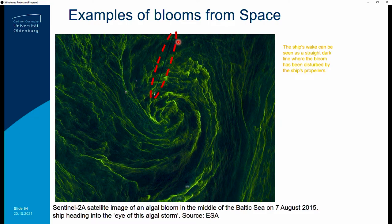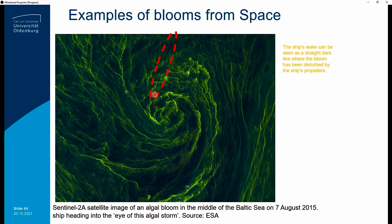Here's an example of a bloom as observed from space. Some of these blooms look like Van Gogh images or portraits. Here you can see a ship moving within the bloom — you can nicely see from space the wake it leaves behind, with the ship visible in the middle.